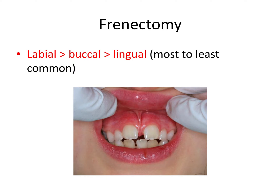The first procedure we'll talk about is a frenectomy. Sometimes the frenum is attached too high — too near the top of the alveolar ridge — and would interfere with seating of the denture. This could be true for not just the labial frenum, but any frenum in the mouth. The most commonly performed frenectomy is for the labial frenum, followed by the buccal, and least common would be the lingual frenectomy. It's important to remember that order.